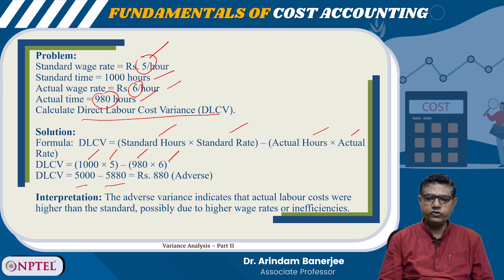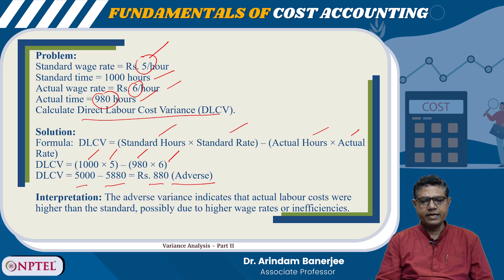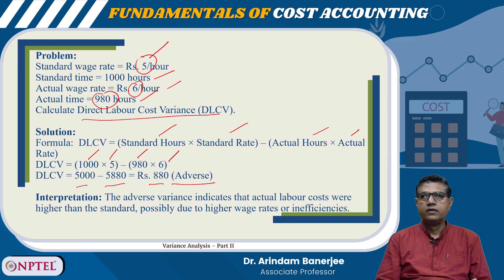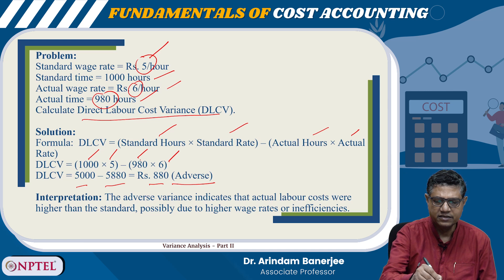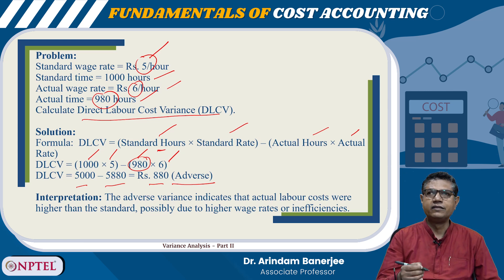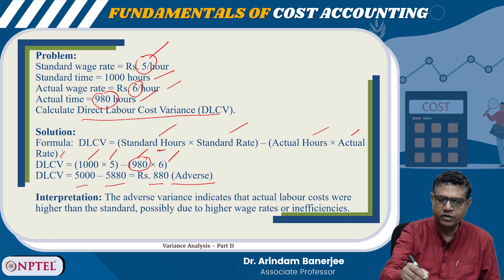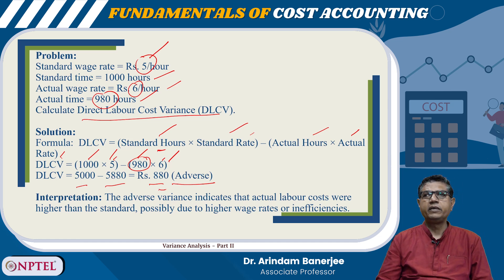The actual cost is more than the standard cost, so it is adverse — the difference is 880. The adverse variance indicates that actual labor costs are higher than standard, possibly due to higher wage rates or inefficiencies. Actual hours are less than standard hours, so it took lesser time to complete the task, but the wage rate is higher — 6 versus 5 — making the total variance adverse.